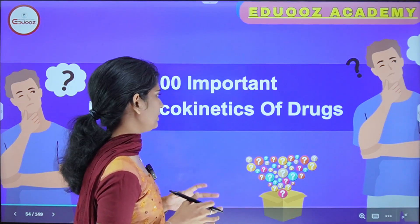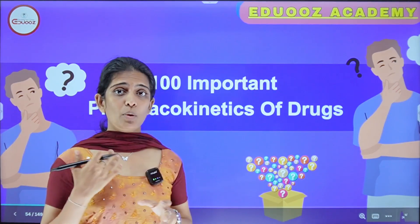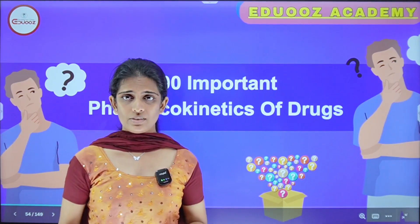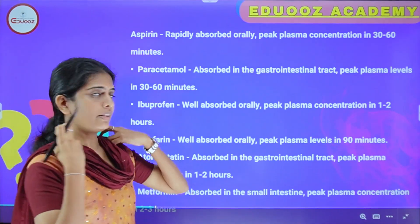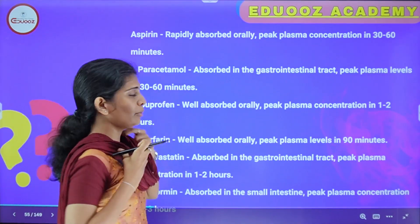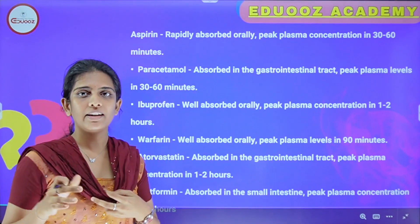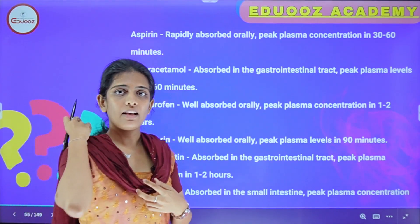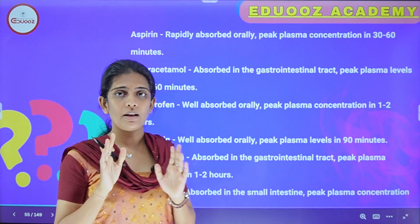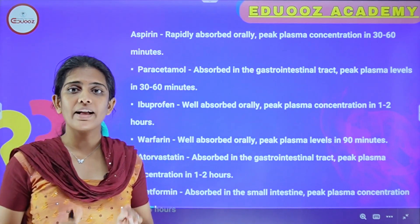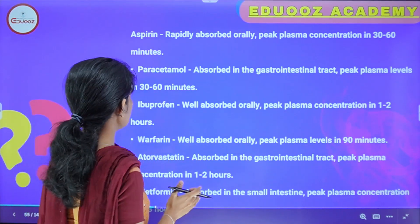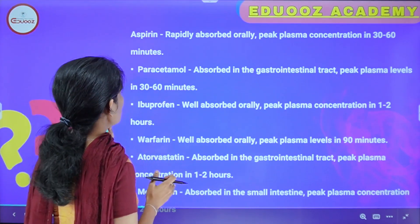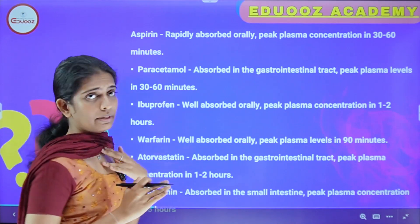Next we are going to discuss the important pharmacokinetics of drugs. We are going to start with the important items of pharmacokinetics. First: aspirin.